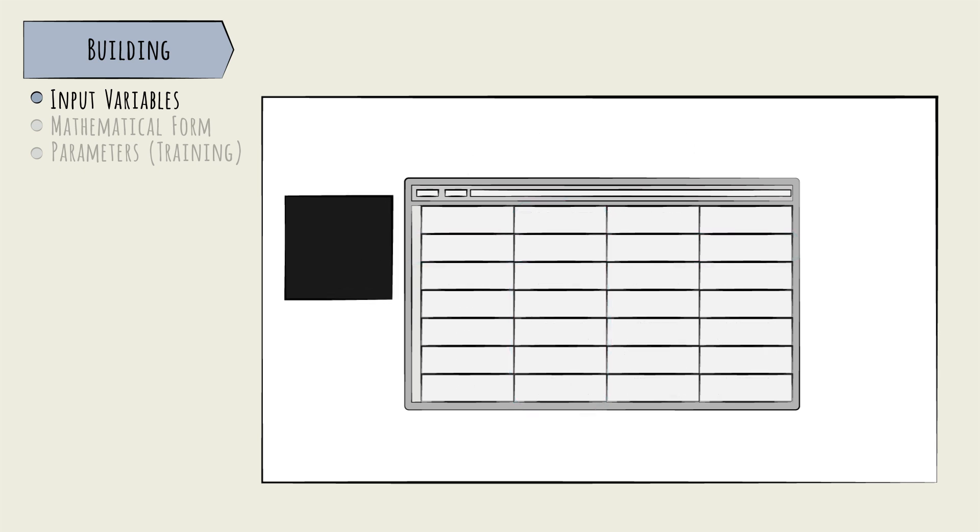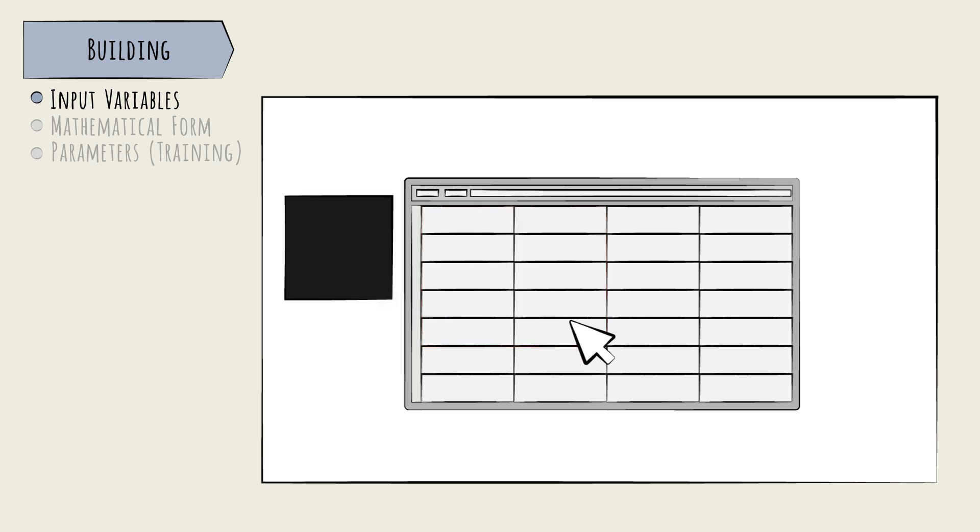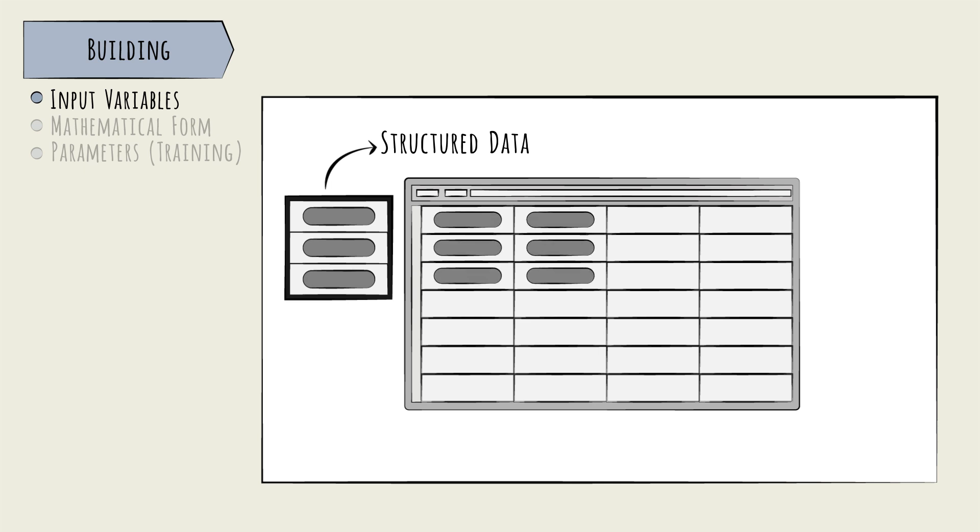In our t-or-no-t model, each individual image file cannot directly become a row in a table. Data of this type is called unstructured. Images, text, and video are all unstructured. To be usable in an AI model, unstructured data must first be structured – transformed into numerical values in a rows and columns friendly format.